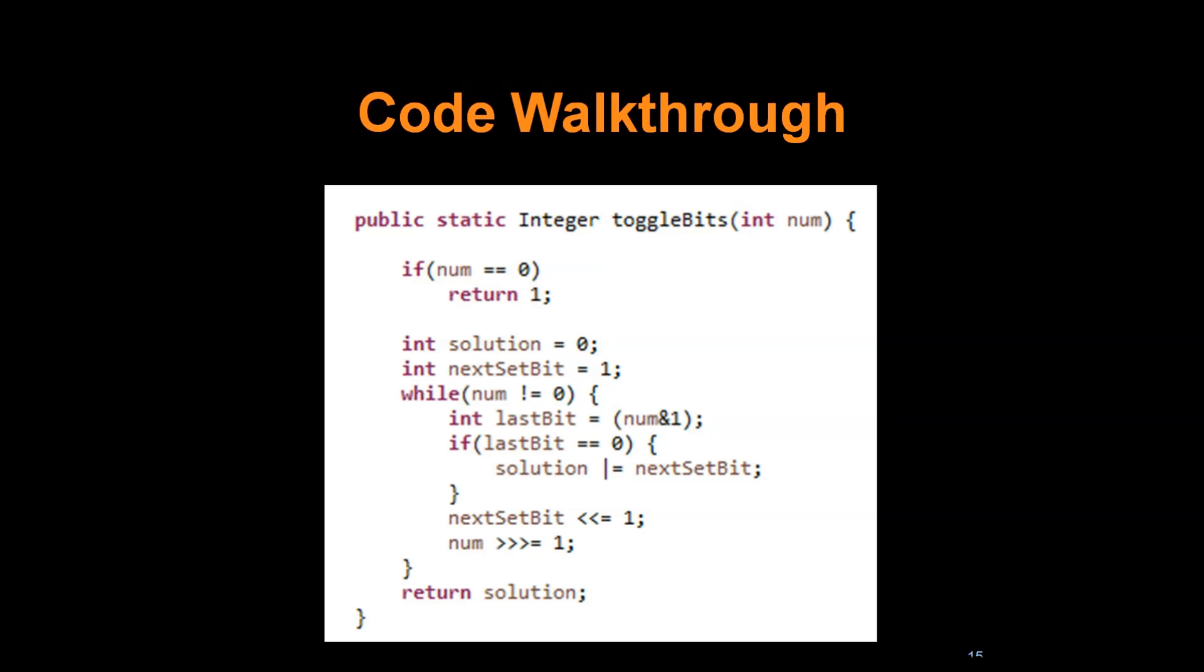If last bit equals 0, what we'll be doing, we had seen previously that we'll be doing solution OR next set bit. Then we'll be doing the left shift of next set bit and we'll be doing a right shift of the current number. And finally when this is done, we'll return the solution.